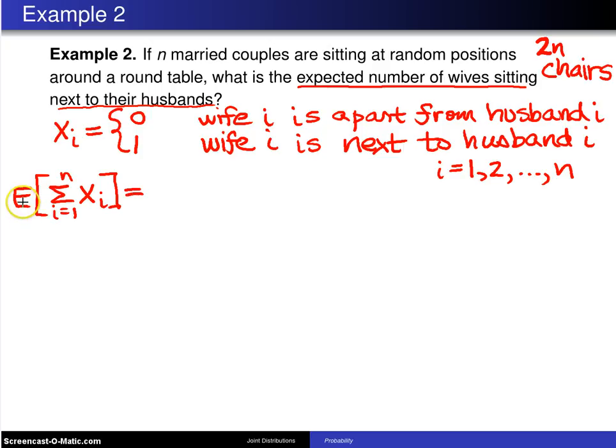Now, you know from the result the expected value of a sum is the sum of the expected values. But as it turns out, no couple is special here. They're all the same, so we're adding up the same thing n times. So this is the same as n times the expected value of, let's just call them couple number 1.